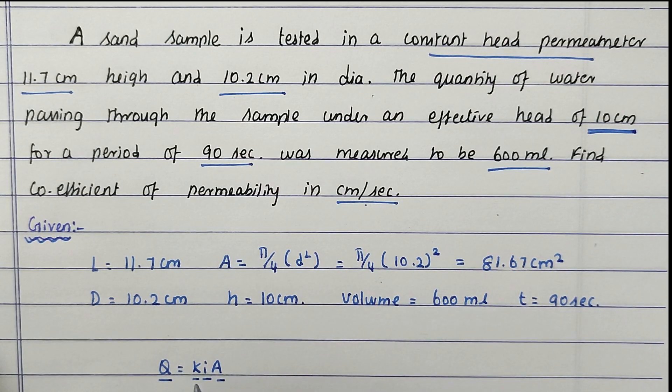From that we can easily find out k, the coefficient of permeability. Now we can find out the i value. i = h/L, the formula we know. h is 10 cm divided by length 11.7.